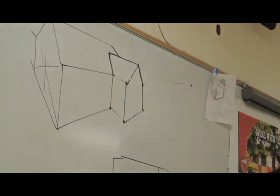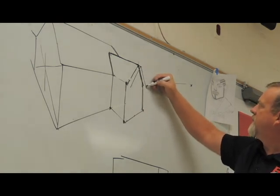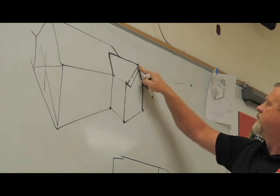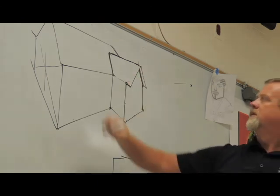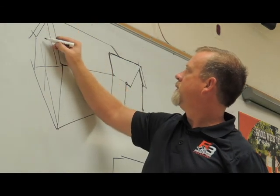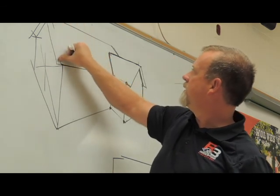And to put those overhangs, you would simply extend your peak line and parallel those lines that come down from the corners to establish an overhang. The same would hold true over here. Extend, parallel, extend, and then erase off the unnecessary stuff.